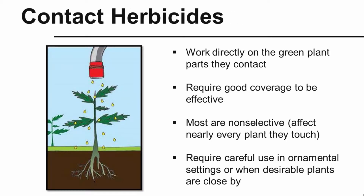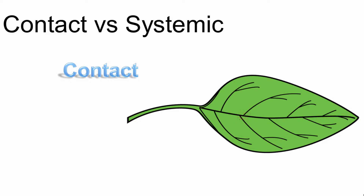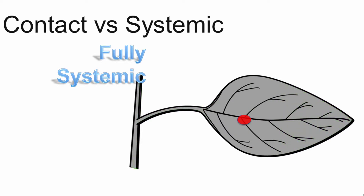Contact herbicides only work on the plant parts they touch or come in contact with. Because of that, we need very good coverage to be effective. Most contact herbicides are non-selective — they're going to affect nearly every plant they touch, requiring very careful use in ornamental settings or when desirable plants are close by. The illustration here shows the contrast: contact herbicide stays where it hits the foliage, while a systemic herbicide is translocated throughout the plant including down to the roots for better control.